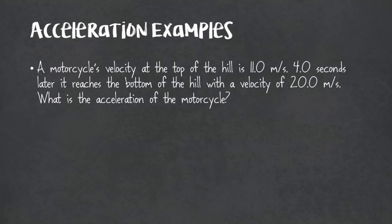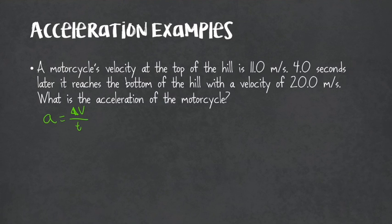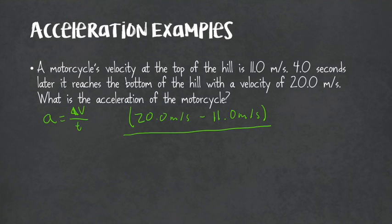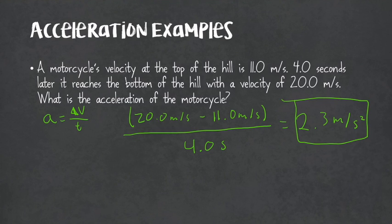Let's do an example. A motorcycle's velocity at the top of a hill is 11 meters per second. Four seconds later, it reaches the bottom with a velocity of 20 meters per second. What is the acceleration? Acceleration equals change in velocity over time: final velocity 20 meters per second minus initial velocity 11 meters per second, divided by 4 seconds, gives an acceleration of 2.3 meters per second squared. Notice it's positive, meaning speed increased. If it were negative, that would indicate slowing down.